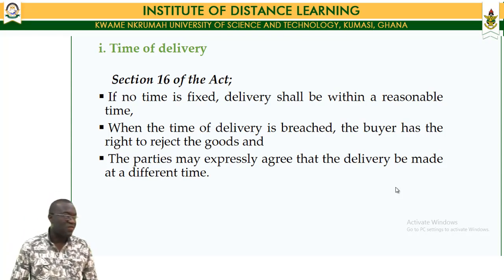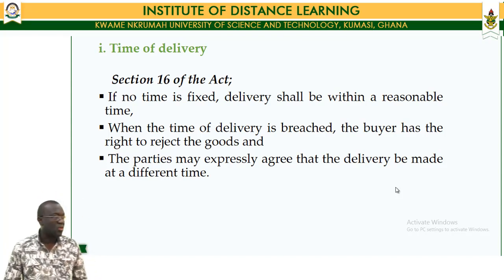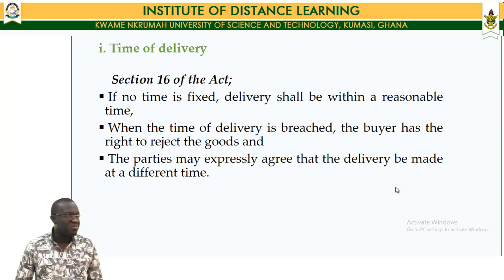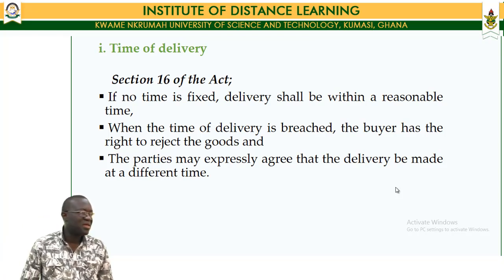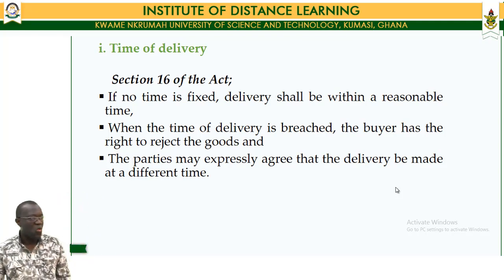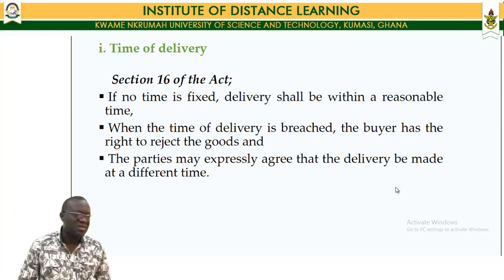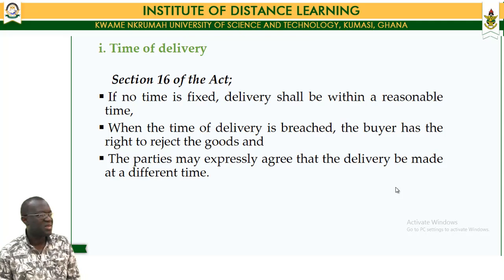Under the Sale of Goods Act, there are other clauses which are exceptions to the general common law rule. Parties may expressly agree that delivery be made at a different time, and it is possible for parties to agree that different times may be allocated for delivery. Under the Ghanaian Sale of Goods Act, parties in the sale of goods will have specific provisions governing these arrangements.